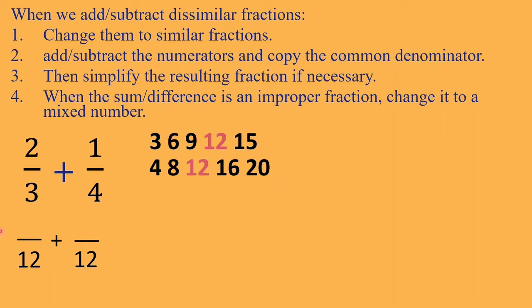So here is one solution. 12 divided by 3 is equal to 4; 4 times 2 is equal to 8. Then, 12 divided by 4 is equal to 3; 3 times 1 is equal to 3. So the fractions are now similar — they have the same denominator. We can now add them: 8 plus 3 is equal to 11 over the common denominator 12. Is there any common factor for 11 and 12? No. So our final answer is 11 over 12.